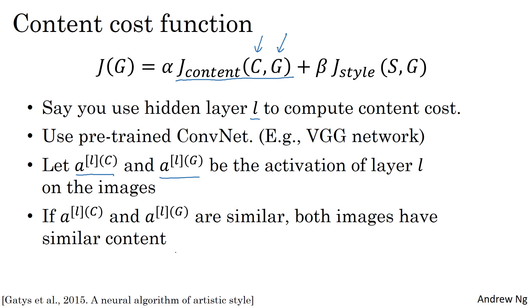So we'll define J_content(C, G) as how different these two activations are. We'll take the element-wise difference between these hidden unit activations in layer L when you pass in the content image compared to when you pass in the generated image, and take that squared.